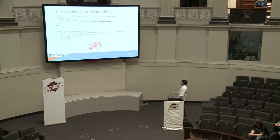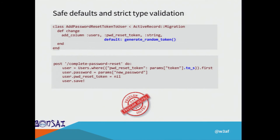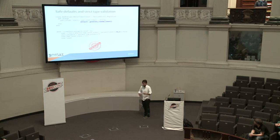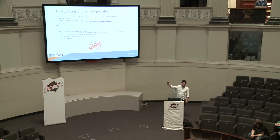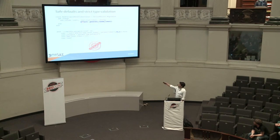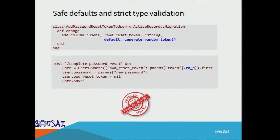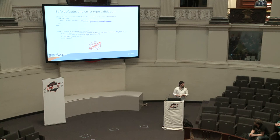How to fix this? There are two ways. One is to add the dot to_string cast, but as I mentioned, developers will forget to apply it everywhere. The better approach is setting a good default for the password_reset_token — something that's not null.